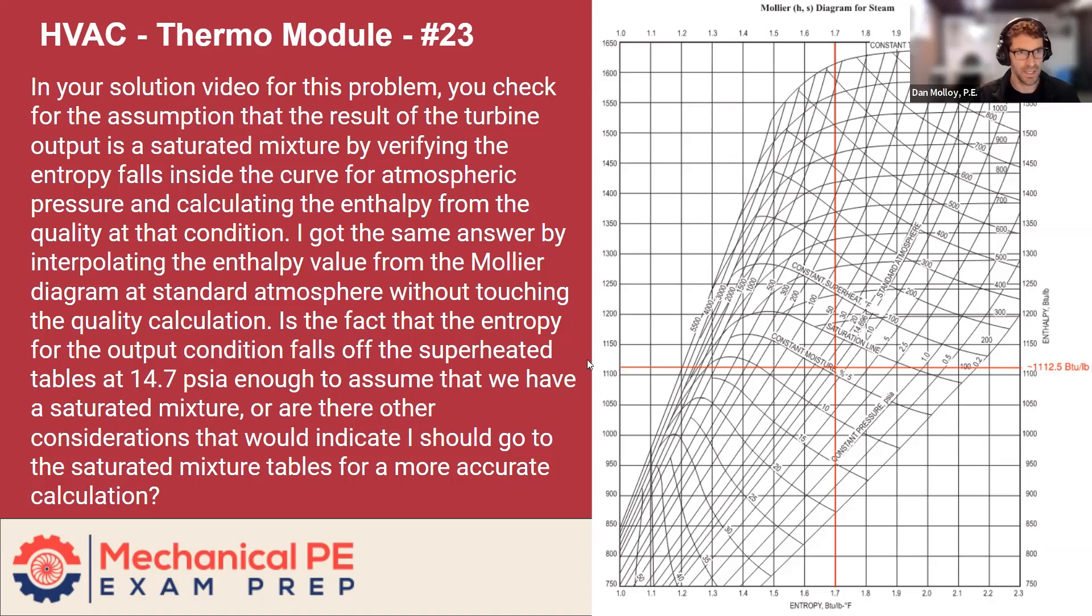And just for context, before I read the question here, the problem was about a non-isentropic turbine, so a turbine where you cannot assume that the entropy at state two is equal to the entropy at state one. So you have to account for the efficiency, which was given in the problem statement, and use that to determine enthalpy of the output state in order to figure out what the power output from the turbine was. So that's kind of just a generic overview of the problem.